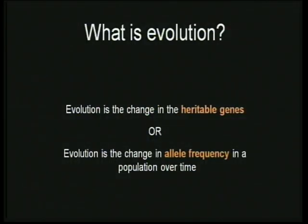We discussed a lot about what evolution is. One way to define evolution is change in heritable genes — we emphasized the word heritable, because if it is not a heritable gene, it has nothing to do with evolution. We also said evolution is change in allele frequency in a population over time. Evolution happens in populations, not in individuals.